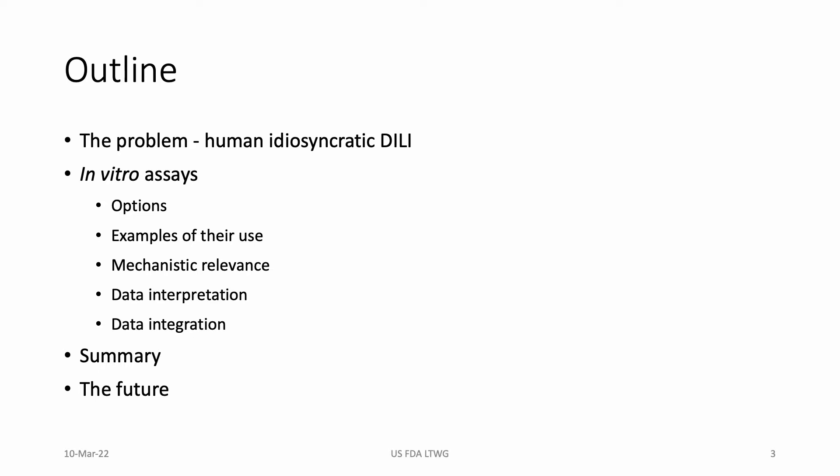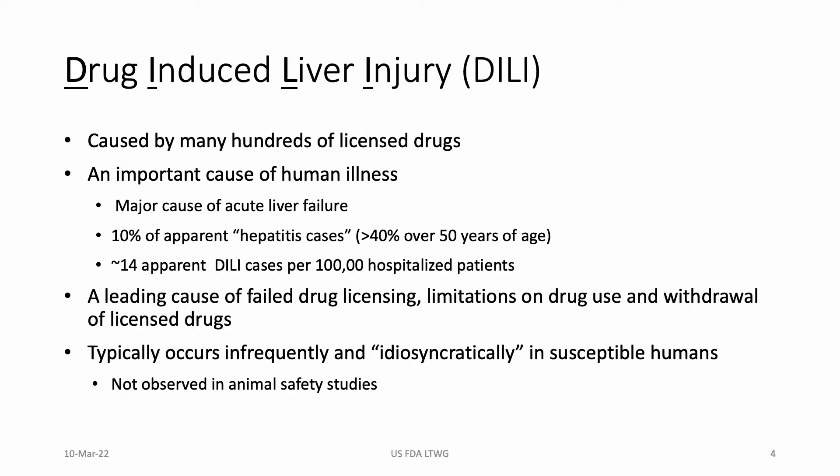I'll talk about the thorny data interpretation and data integration issues, then summarize everything and give some personal perspectives on the way forward. One of the things I like very much about drug-induced liver injury is it's so complicated. I've been obsessed by it since the very beginning of my scientific career. There's so much lack of consensus on the best way to manage and predict it — that excites me, but at my time of life it's deeply frustrating and I think we need to do much better.